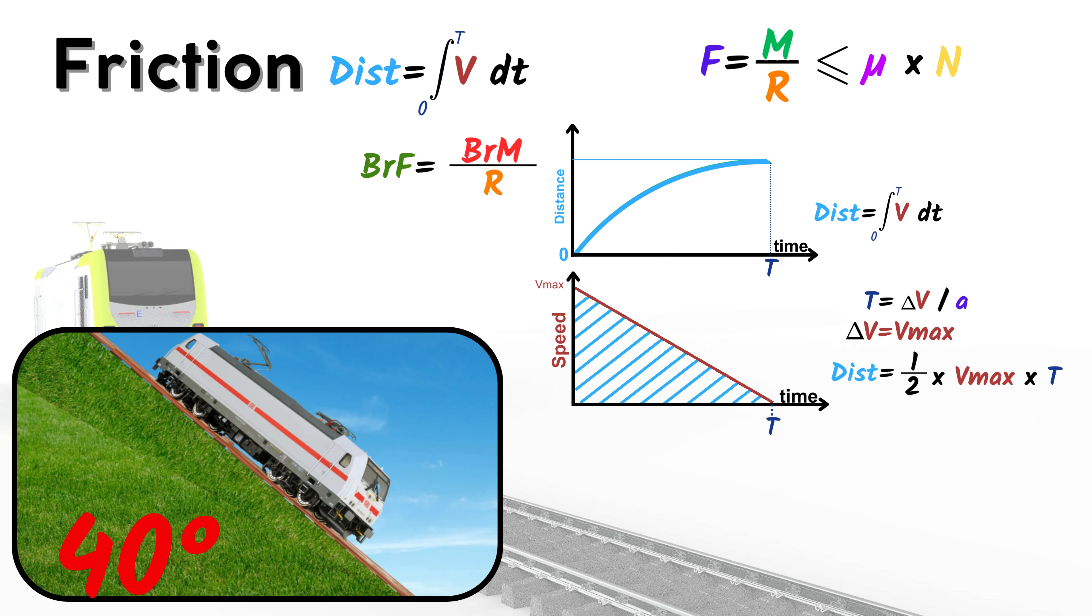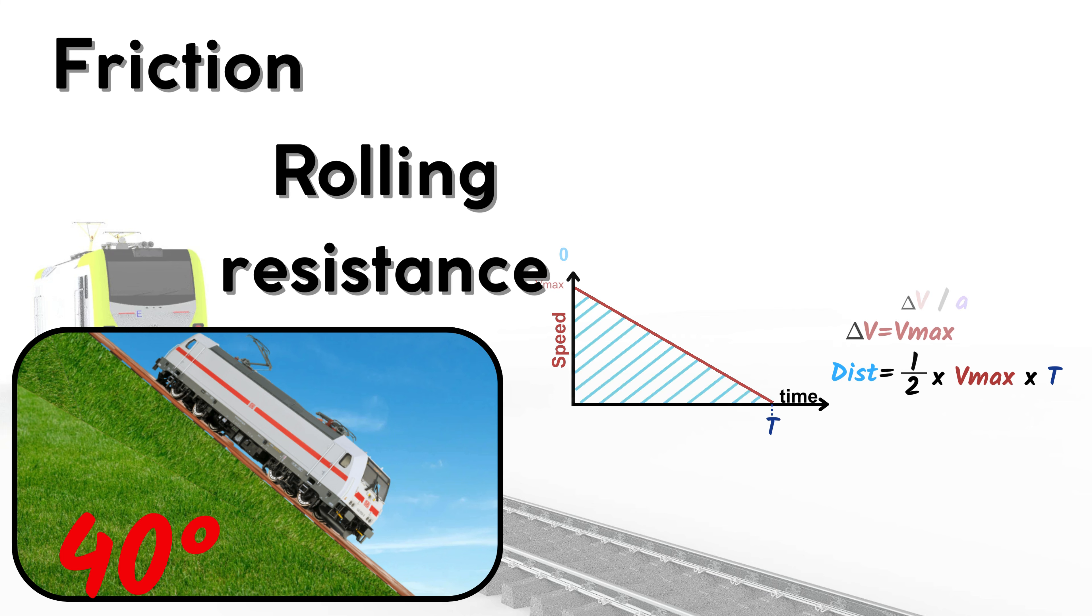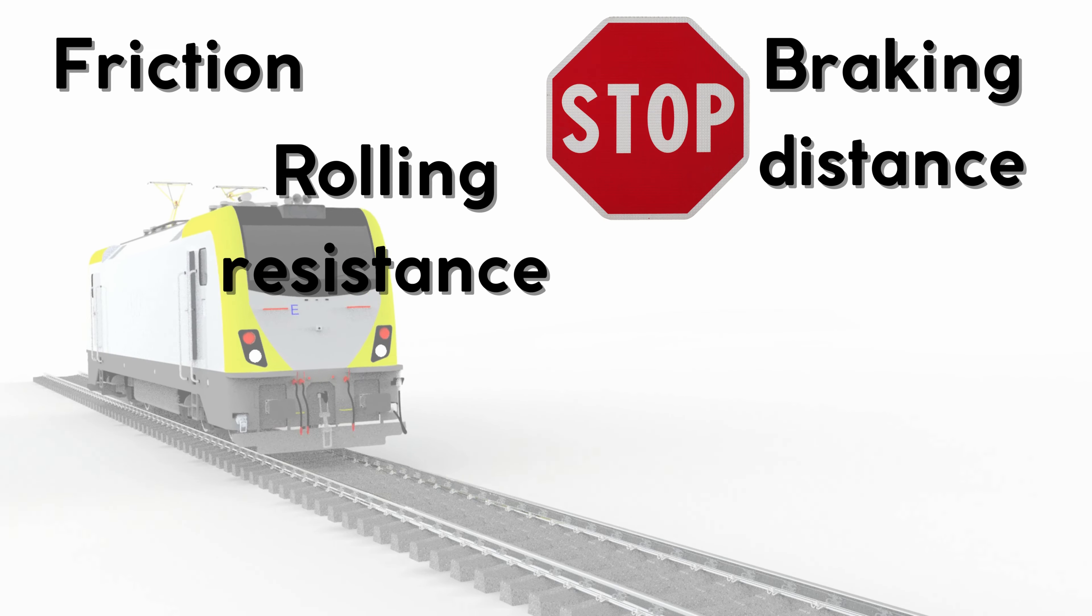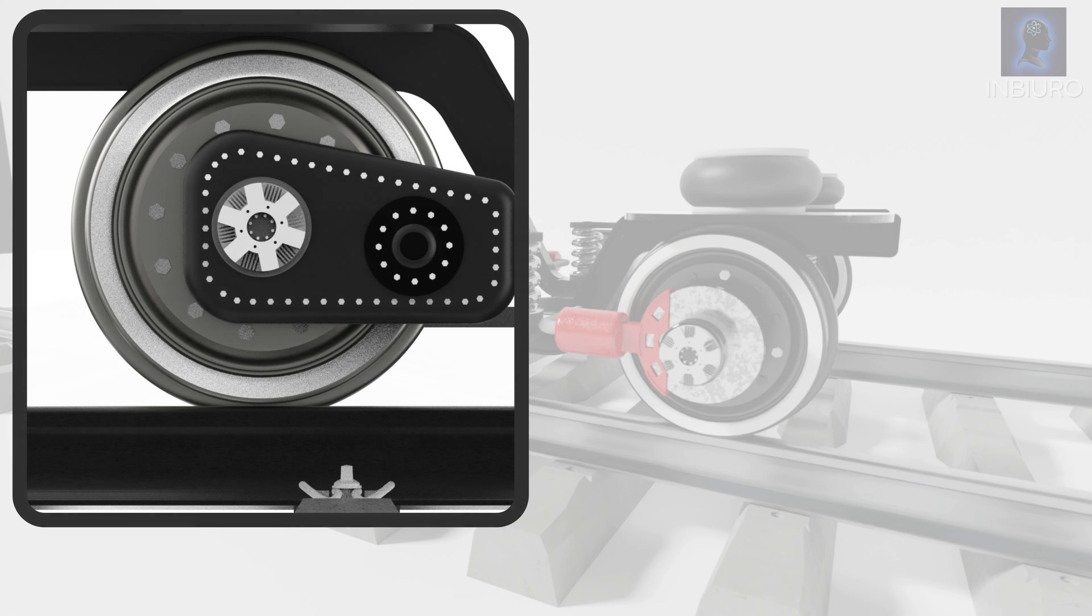What is the difference between friction and rolling resistance, and how they influence traction effort and braking distance? Let's have a closer look on a wheel on rail.